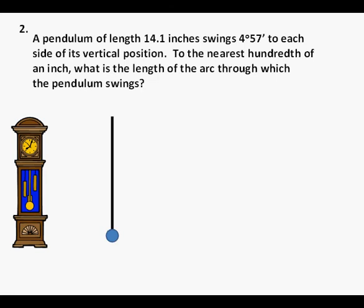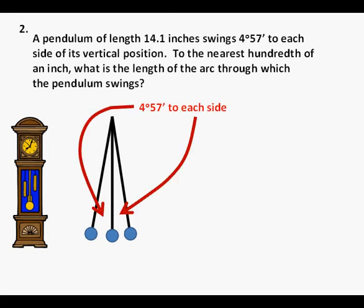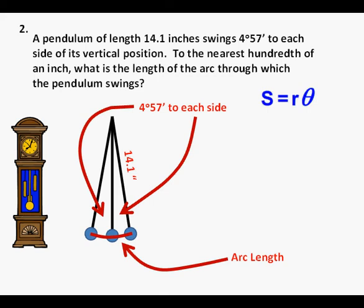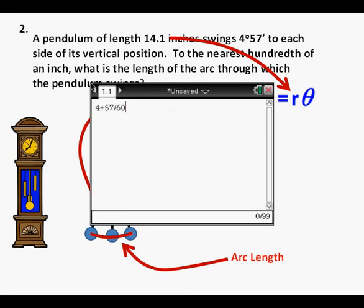Here's a pendulum like there might be in a clock. It swings back and forth at a constant frequency to keep time or rhythm. As it swings back and forth 4 degrees 57 minutes to either side of vertical it traces an arc. This is the arc length traced in red. The length of the pendulum is 14.1 inches. To solve this problem we go back to the arc length formula, s equals the radius times theta in radians. We have the radius of 14.1 inches, the length of the pendulum, but 4 degrees 57 minutes needs to be converted to a decimal equivalent.